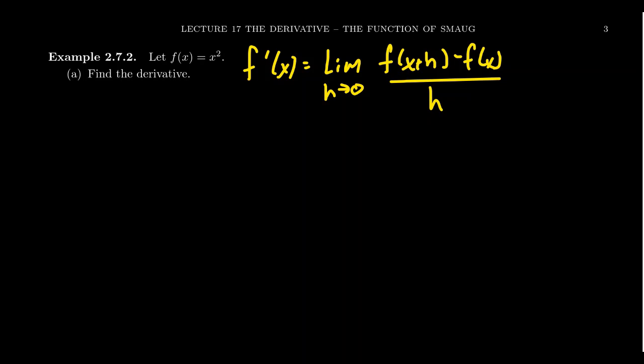That's one version of the derivative. Another version that more resembles the slope formula is you take the limit as b approaches x of f of b minus f of x all over b minus x. And so either one of these versions is perfectly fine.